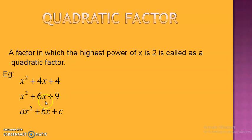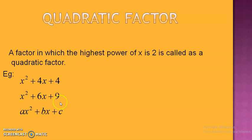Similarly, in the second factor also, the power of x in 6x is 1 and the power of x in x squared is 2. The highest power is 2. Therefore, this is also an example of a quadratic factor. Similar is the case of ax squared plus bx plus c — it is also called a quadratic factor.